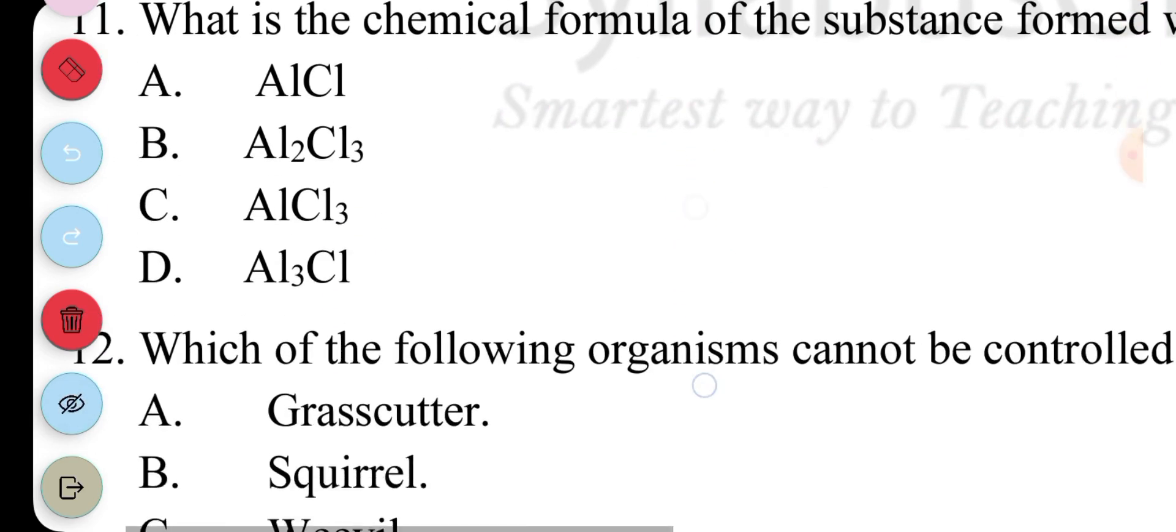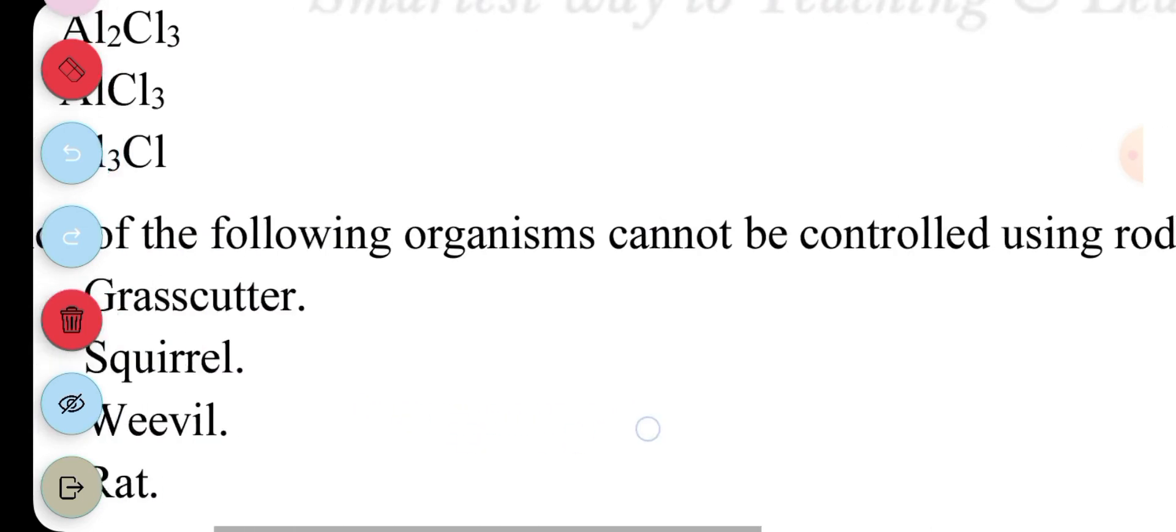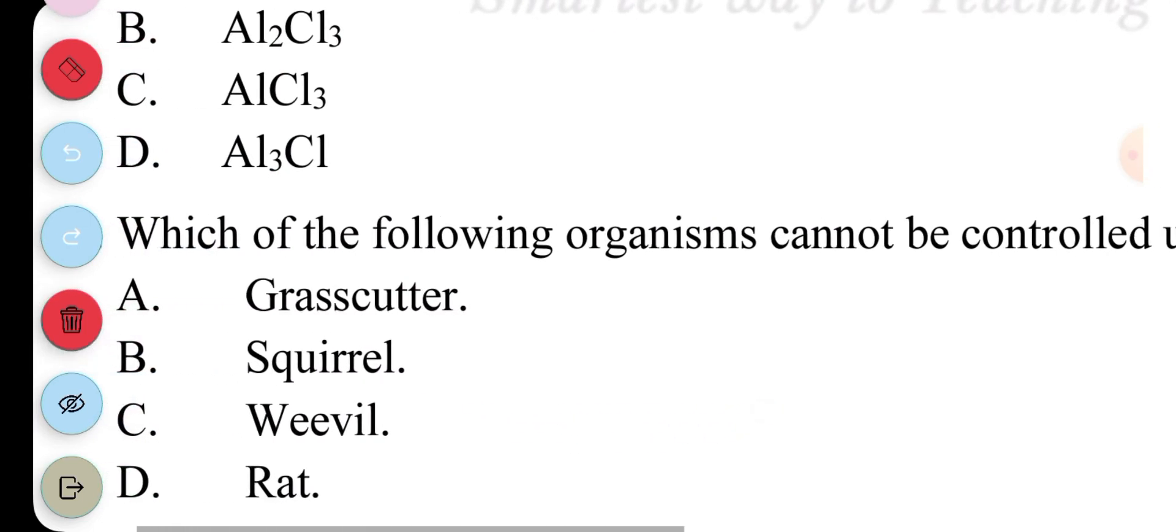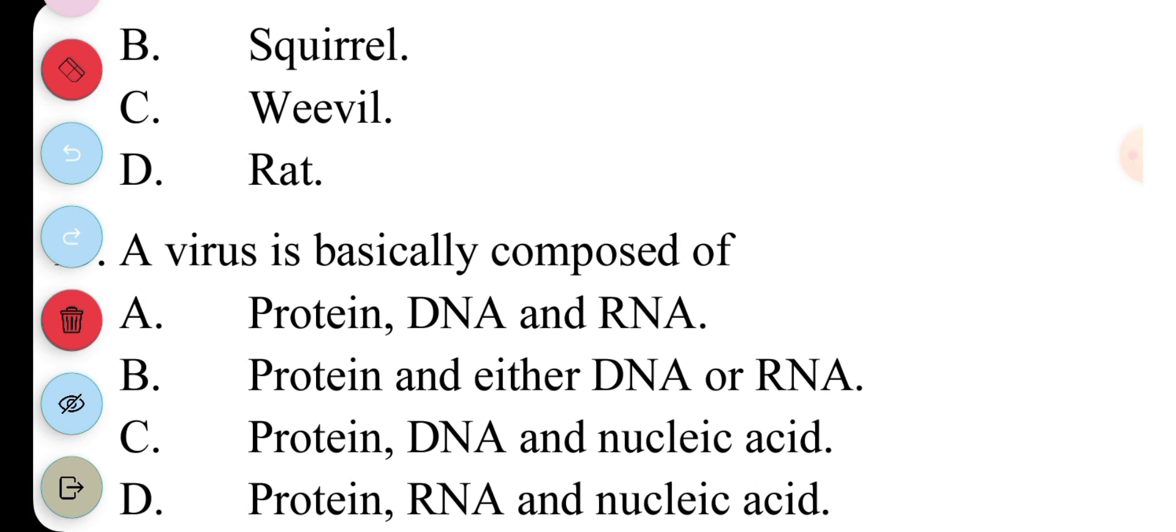Question 12, which of the following organisms cannot be controlled using rodenticides? A, grass cutter; B, squirrel; C, weevil; D, rat. C, weevil. Weevil is not a rodent. 13, a virus is basically composed of A, protein, DNA, and RNA; B, protein and either DNA or RNA; C, protein, DNA, and nucleic acid; D, protein, RNA, and nucleic acid. The answer to this question is B.